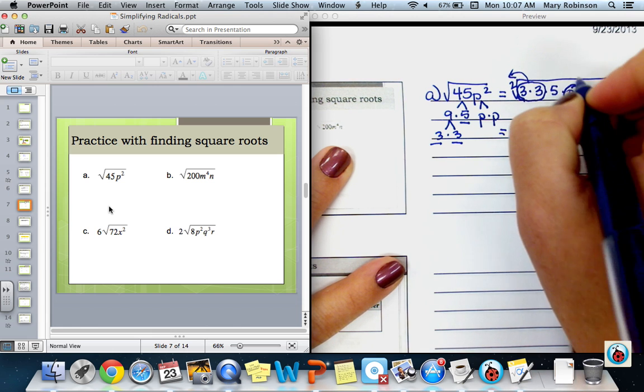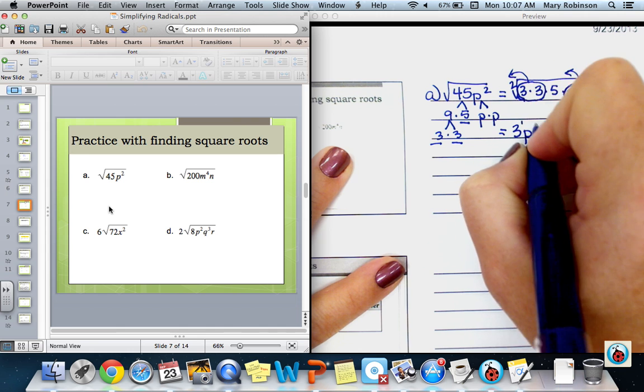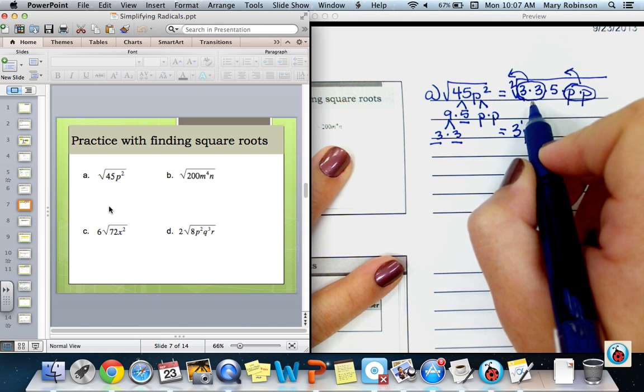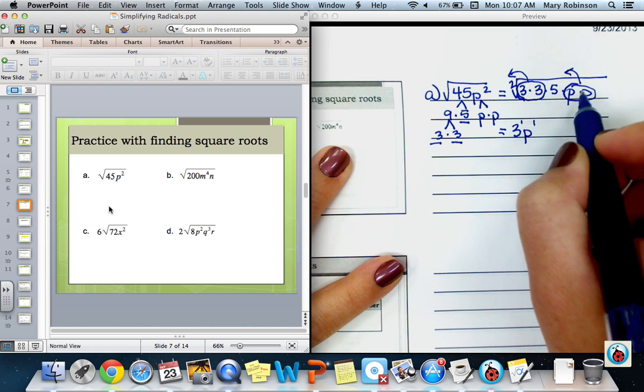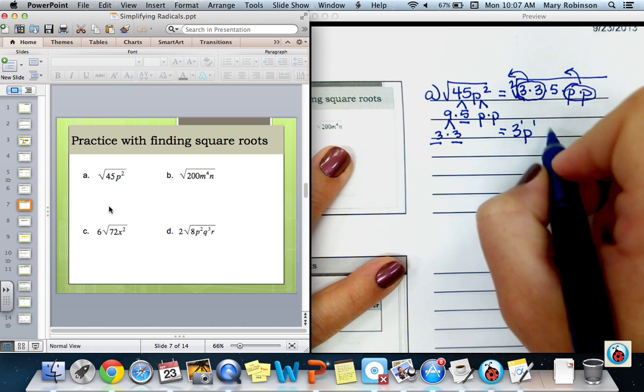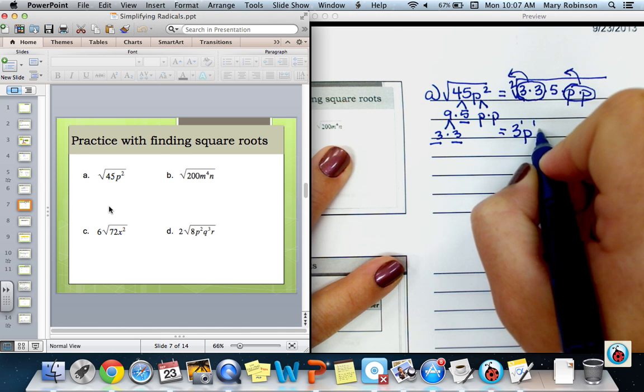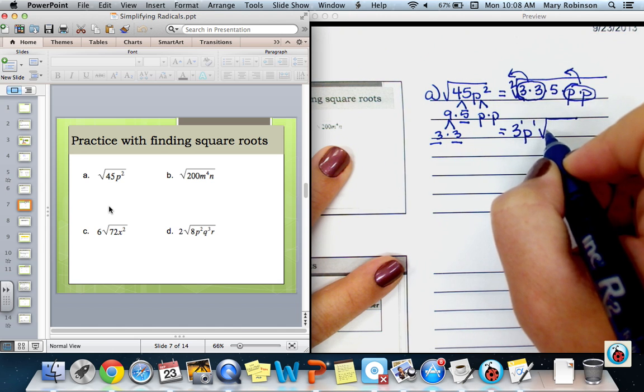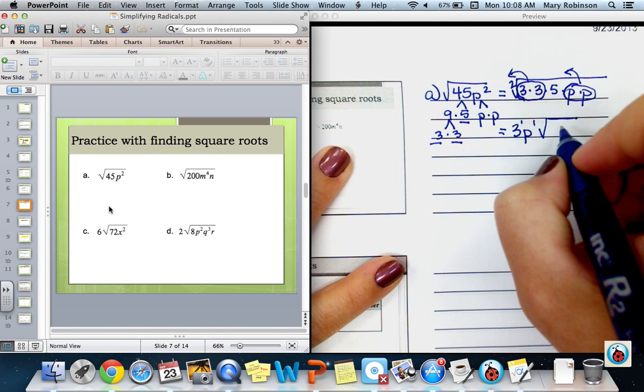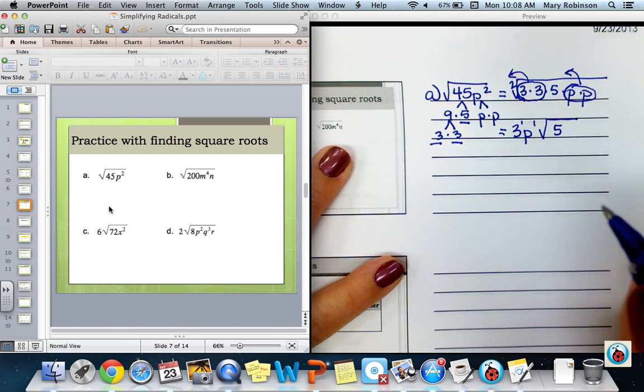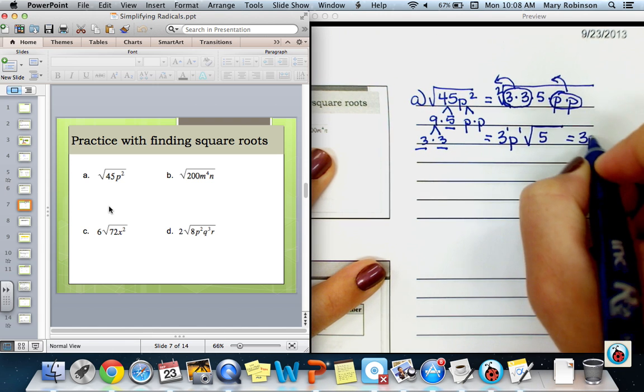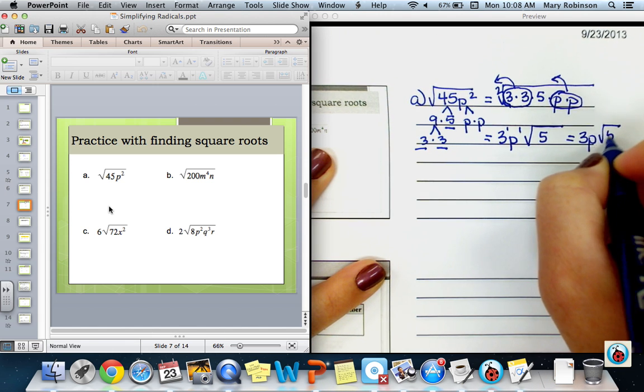So because I formed this, there's one group. The exponent here would represent how many groups of the 3's we had and how many groups of p's we had. Anything that does not get grouped up remains under our radical. So we don't need to put the 2 as our index. Remember that is understood. But anything left remains under the radical. So our final answer would simply look like 3p times the square root of 5.